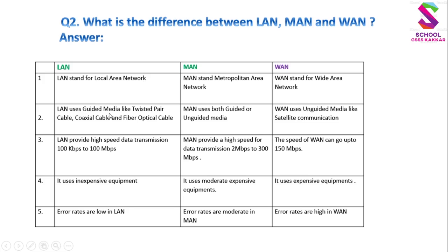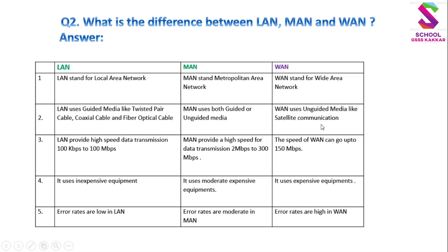दूसरा difference — Media के अनुसार: LAN uses guided media, like twisted pair cable, coaxial cable, and fiber optical cable — यानि LAN में हम तारों वाले cables उपयोग करते हैं जिसे guided media कहते हैं। MAN uses both guided and unguided media — यानि तारों वाला भी और बिना तारों वाला, wireless भी। WAN uses unguided media like satellite communication — बिना तारों वाला, जैसे satellite communication और wireless।